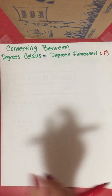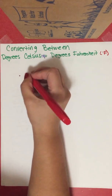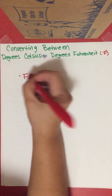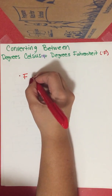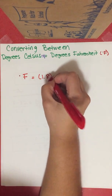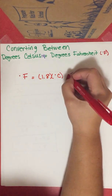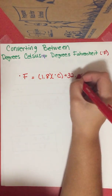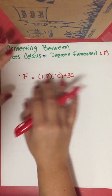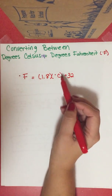When starting off with these problems, I like to begin with an equation that I have memorized. The equation is: degrees Fahrenheit equals 1.8 times the degrees Celsius plus 32.